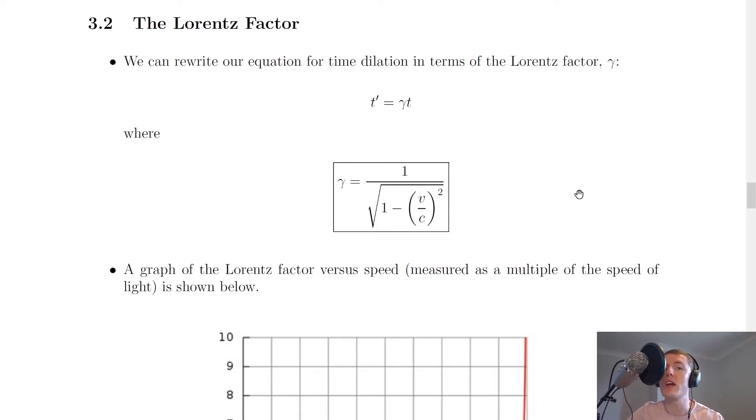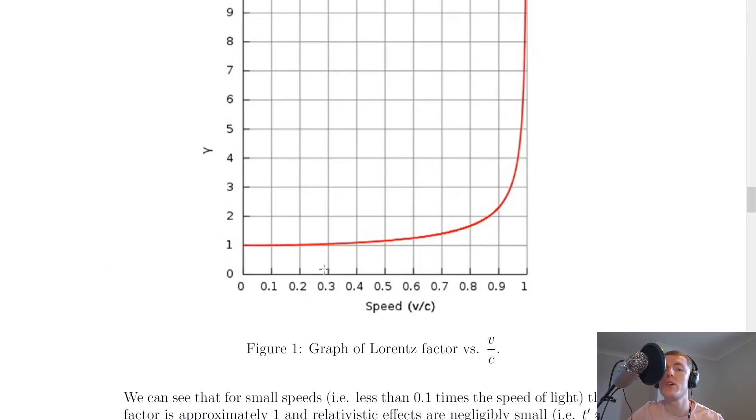Because remember we said that in classical relativity for everyday objects, the speeds are going to be less than 10% the speed of light, so we're going to be dealing with non-relativistic velocities. So for non-relativistic velocities, gamma is equal to 1, and the effects of time dilation are not visible.